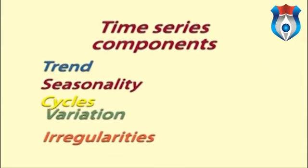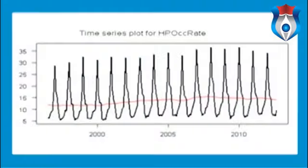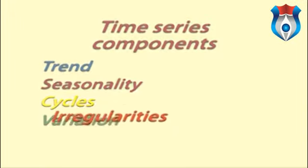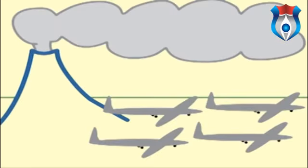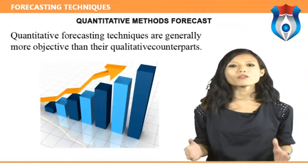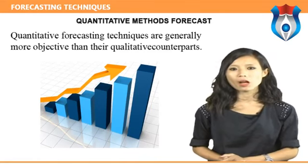In all data there is random variation. Some time series will be very regular with little random variation, while others may consist of not much else. Sometimes there are strange dips or jumps in a series — these can be due to a one-off event such as an ash cloud disrupting air travel, or an anticipated change in the rate of sales tax.